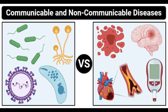Regarding spread, there are many reasons for the spread of communicable diseases — it can spread through the air, by direct contact with a contaminated surface, food, etc. Non-communicable diseases do not spread from one person to another at all. Regarding organs affected, the most common communicable diseases affect the respiratory tract, such as the common cold, influenza, and tuberculosis.